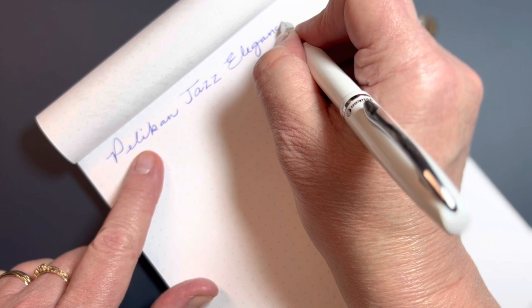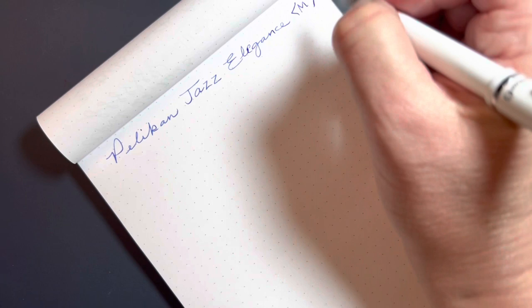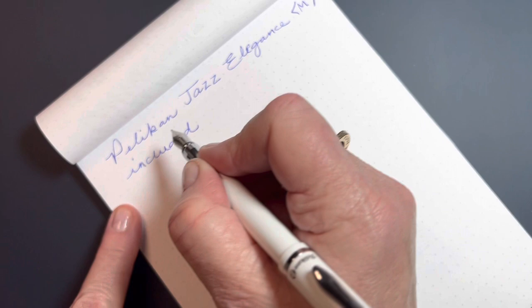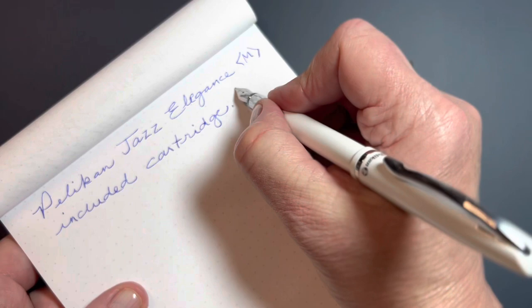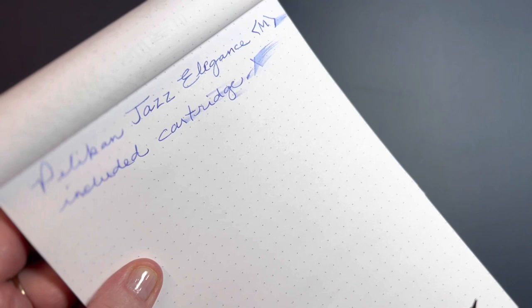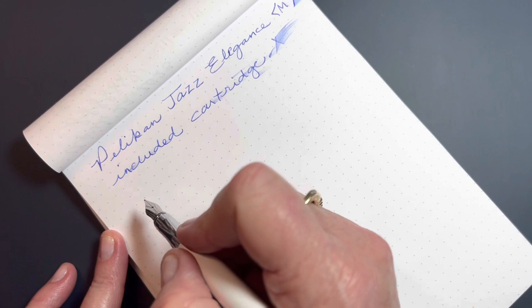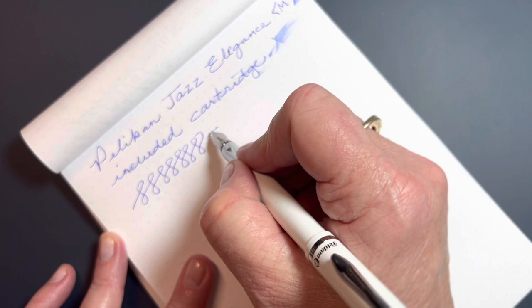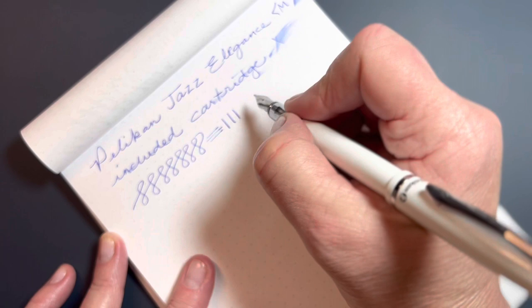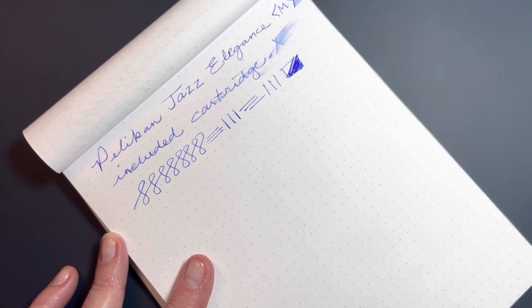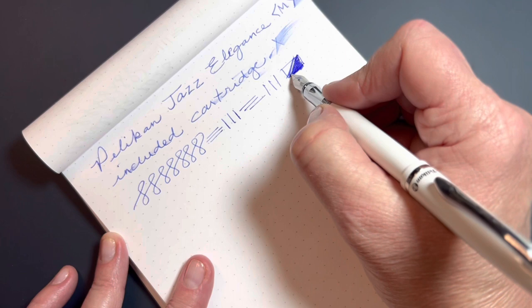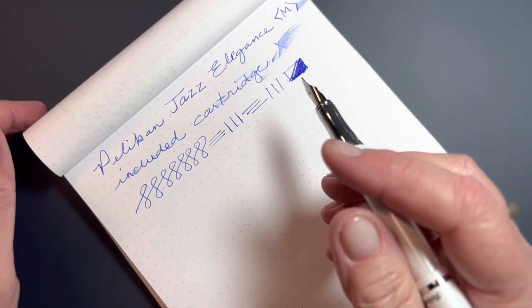Jazz Elegance. And this is a medium nib with the included cartridge. And it seems to be a very quick drying ink. Nice on the Rhodia dot pad. The nib is very smooth. It feels very much like a wet medium or a very soft, smooth medium. Very enjoyable. So, when my converter comes in that I ordered from Atlas Stationers, then I'll be able to choose a new ink. But until then, I can do some happy writing with this wonderful blue Pelican ink.